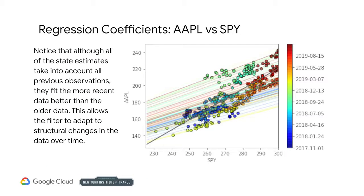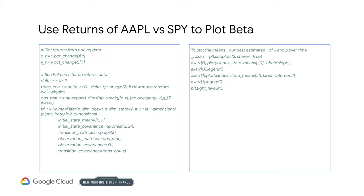Notice that although each of the state estimates takes into account all previous observations, they fit the more recent data better than the older data. This allows the filter to adapt to structural changes in the data over time. We now calculate returns from the price data and run the Kalman filter to estimate alpha and beta for returns.